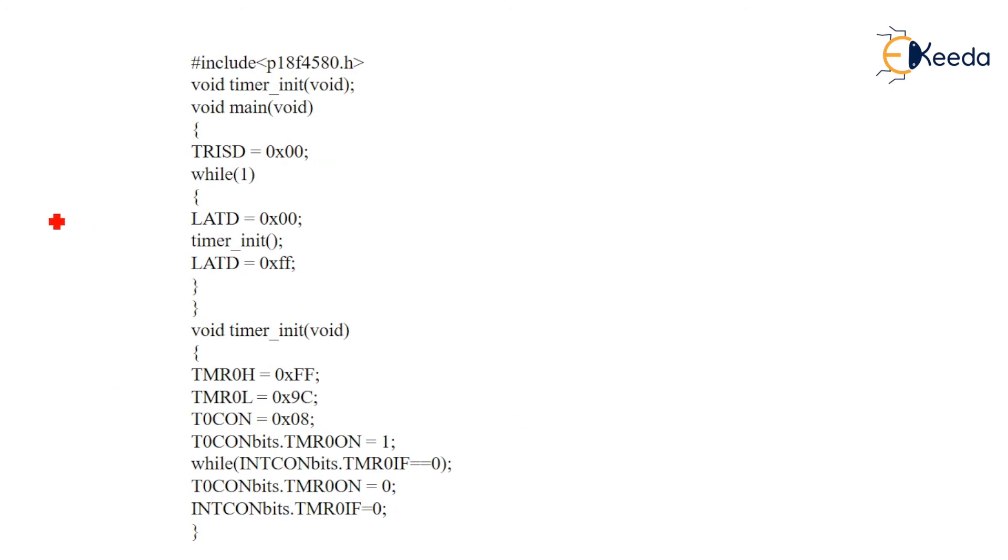Here I have written a program to generate 10 kilohertz square wave. So we have to define the header file, void timer_init void, void main. TRISD - what does TRISD mean? Each port has three registers: TRIS, PORT, and LATCH, which are already defined in SFRs. If I am talking about Port D, there's TRISD, LATD, and PORTD.